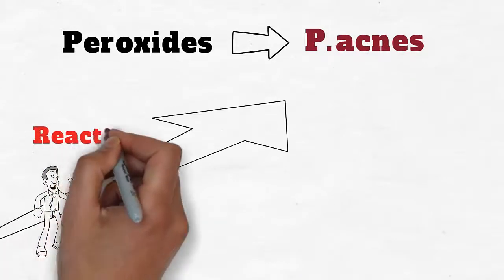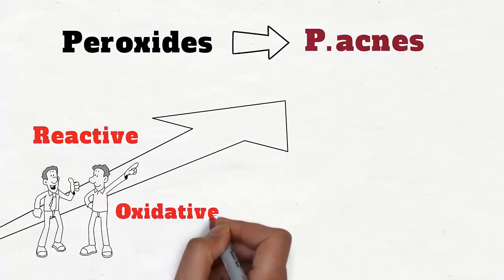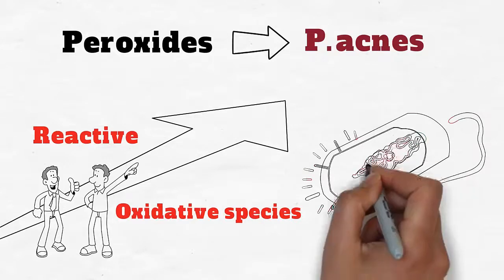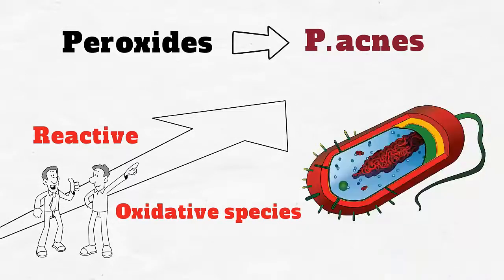First, they are a highly reactive and oxidative species. Therefore, they can act fast and break down microbial cell walls quickly.